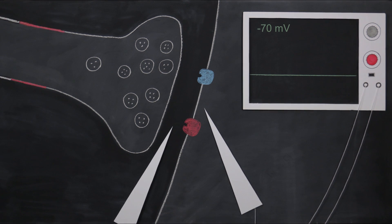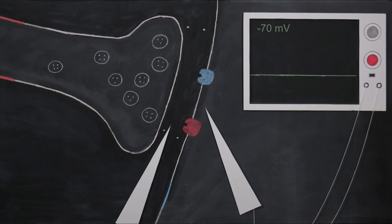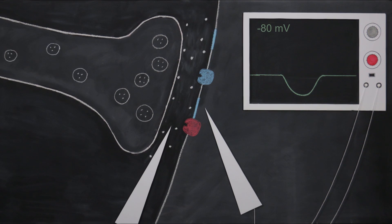When a neuron fires, it releases chemicals called neurotransmitters from its presynaptic buttons. Those neurotransmitter molecules travel across the synapse and bind to specialized receptor molecules on the membranes of the postsynaptic neuron.